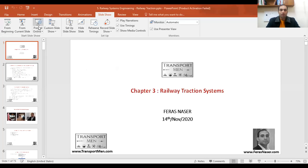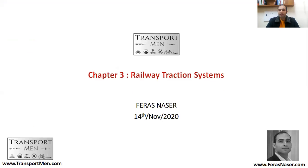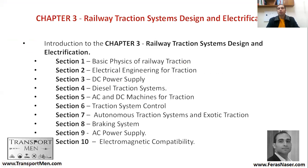This is the beginning of chapter: railway traction systems. In this chapter we'll have a quick introduction to the lecturer, then look at some basic physics laws, then some electrical engineering concepts associated with traction. We'll then discuss DC power supply, diesel traction systems, and AC and DC machines for traction — machines meaning motors.